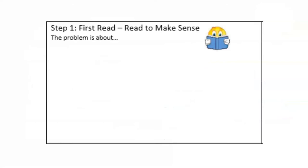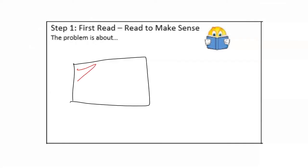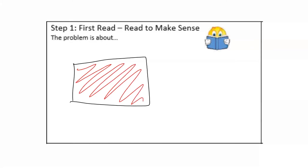In my organizer, I'm going to draw a quick sketch to show what I'm visualizing. I see a bulletin board that is covered in paper and also has a border. It has dimensions, but I don't know what they are yet.